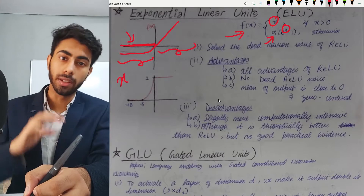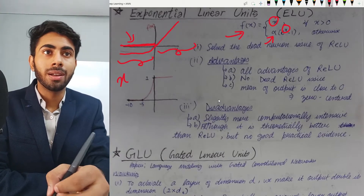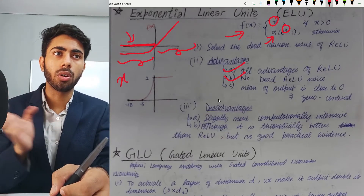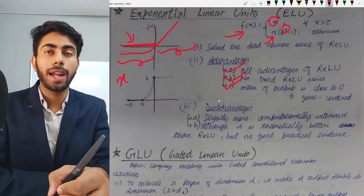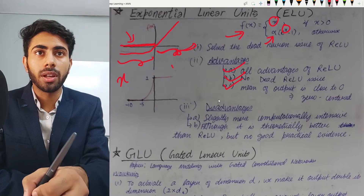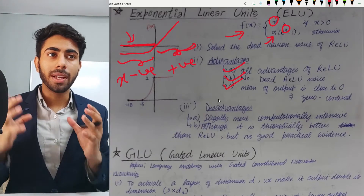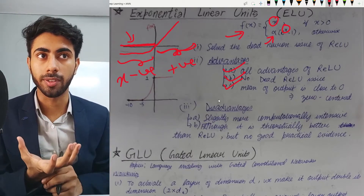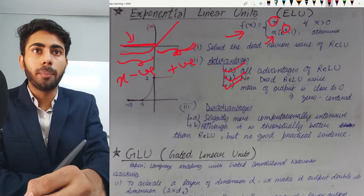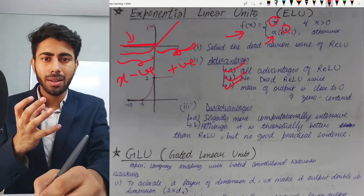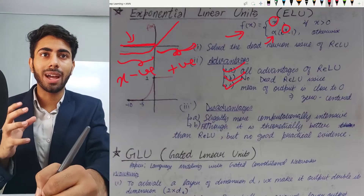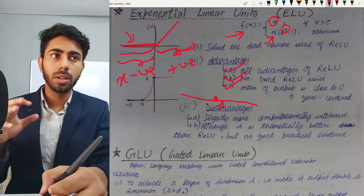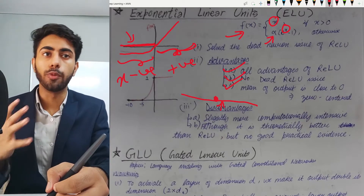The advantages of ELU are: first, it has all the advantages of ReLU. Second, there is no dying ReLU or dead neuron issue. Third, because ELU produces both positive and negative output values, the mean output is approximately zero-centered — not exactly zero, but close to zero — which positively affects weight update efficiency during training.